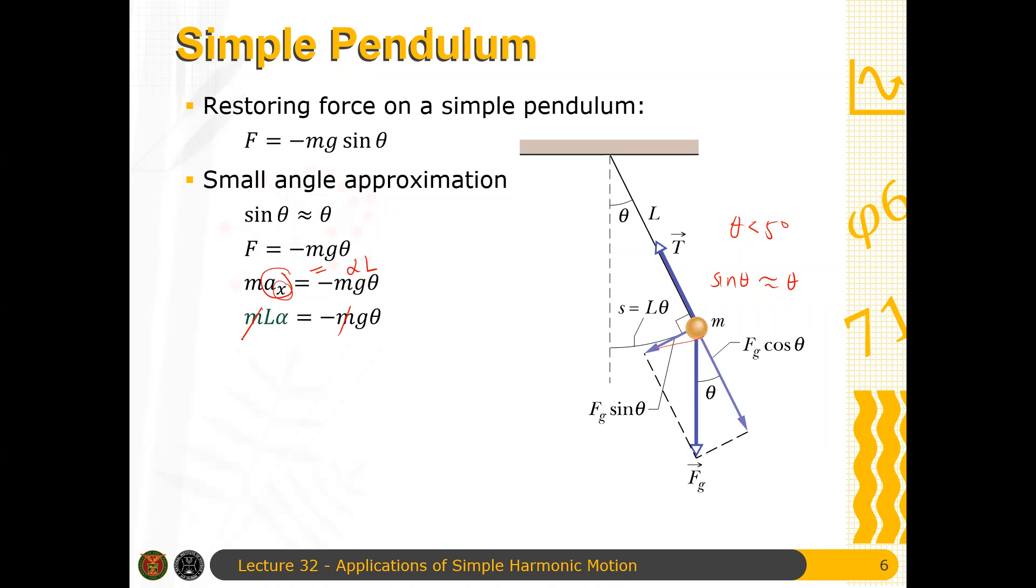Therefore, the m will cancel, implying that the period of the pendulum is independent of the mass of the bob. And therefore, you have alpha, which is just the second time derivative of theta with respect to time, which is equal to minus g over l theta.